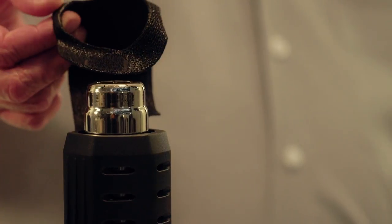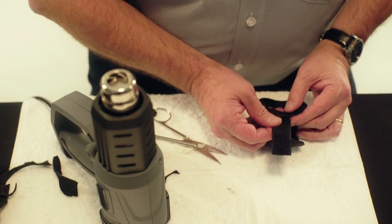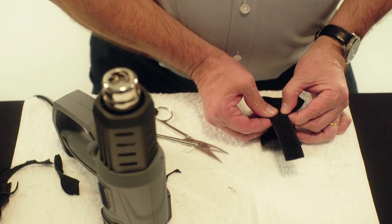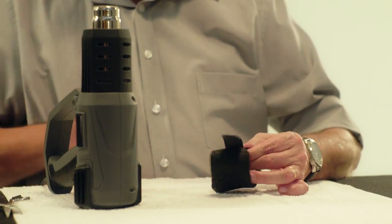Attach the Velcro loop by heating the orthosis on the inner portion of the opposite side and press the fuzzy side of the Velcro loop into the thermoplastic material.